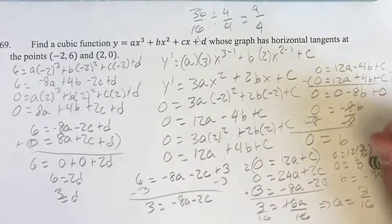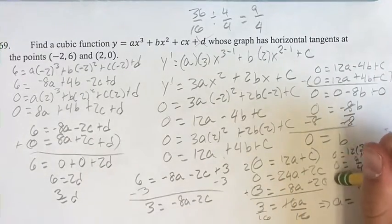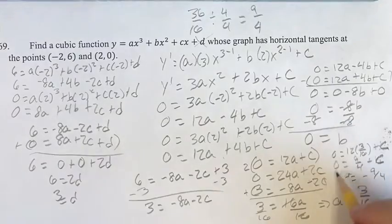Sorry, this is c. 12a plus c equals 0. This is c all the way around, which is good because it's the one variable we did not have.